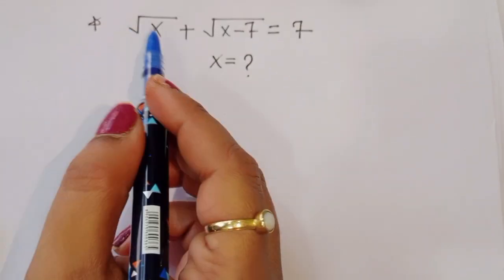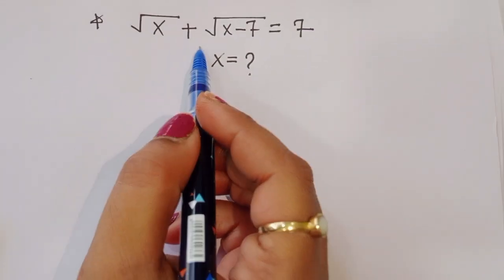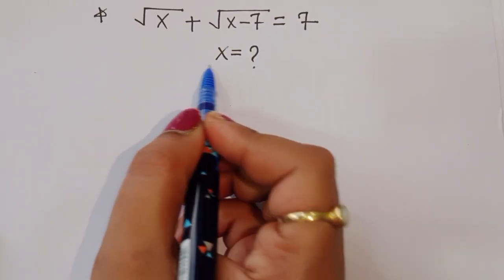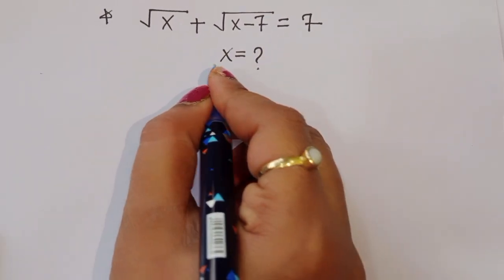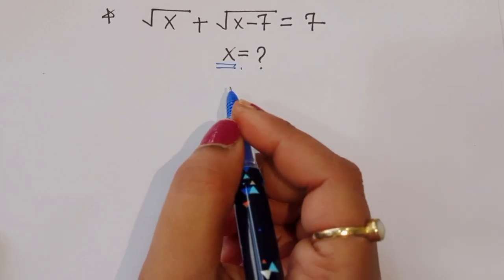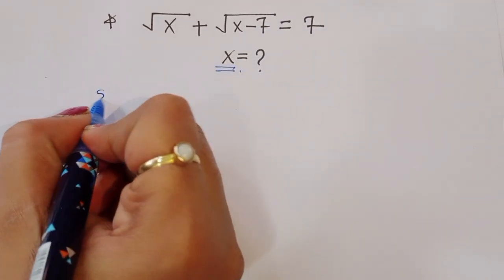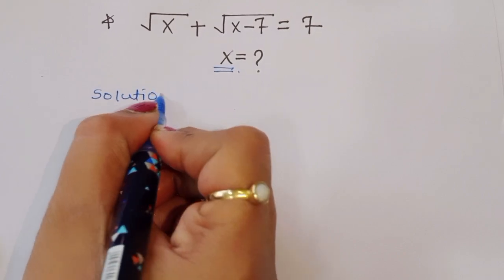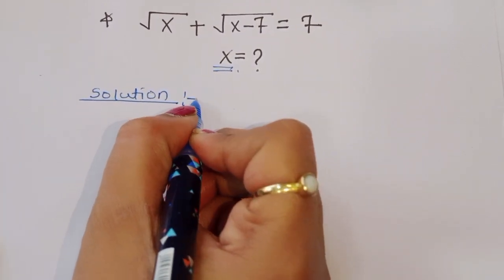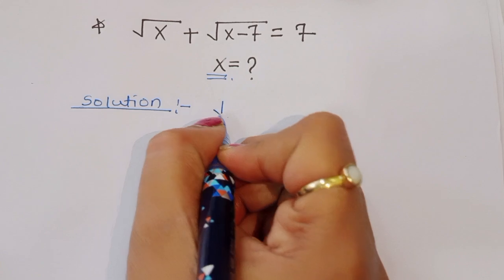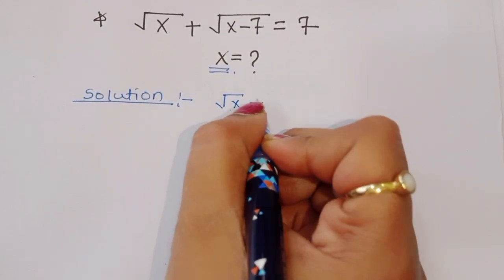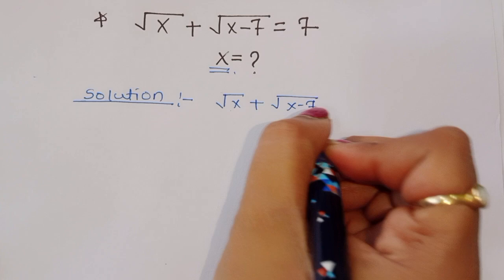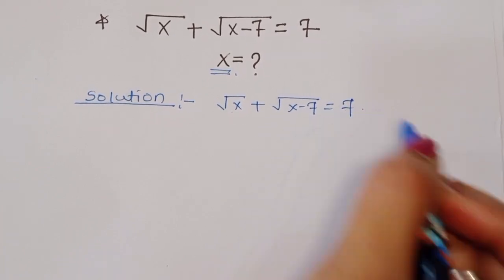The question is: given square root of x plus square root of x minus 7 is equal to 7, we have to find out the value of x. What is the value of x? Let's see the solution. First, what is given: square root of x plus square root of x minus 7 is equal to 7.